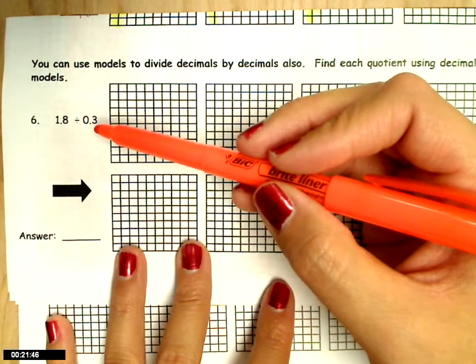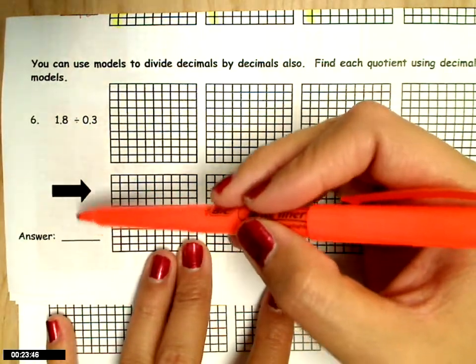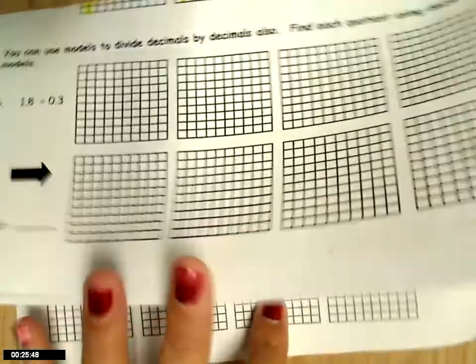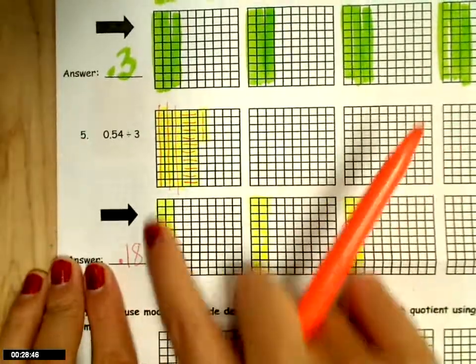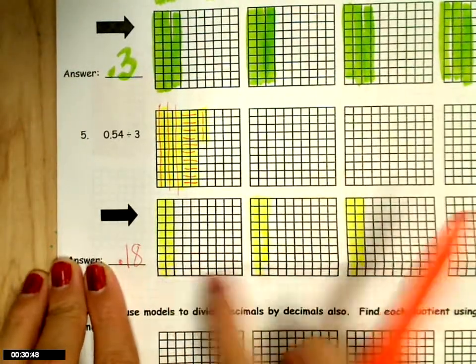And so the answer now will tell me how many groups there are, where before, like when I did this problem, the answer told me how many were in the three groups.